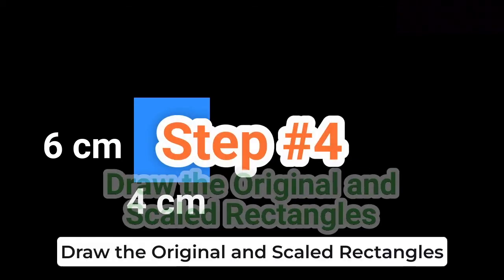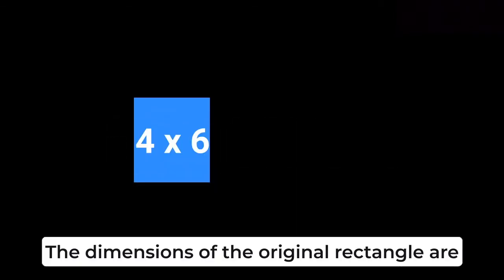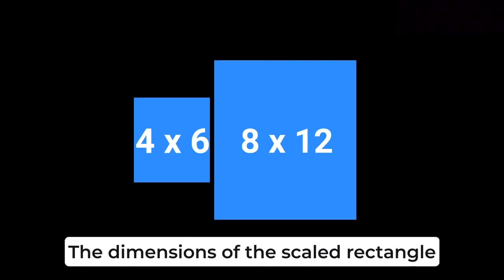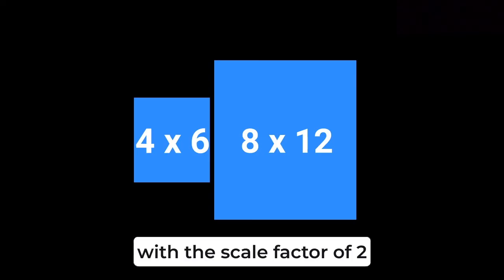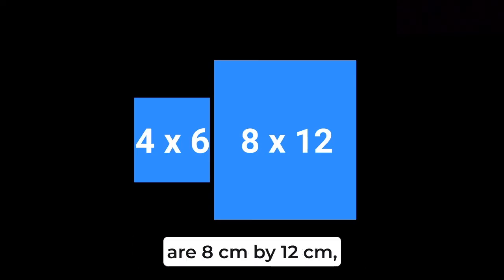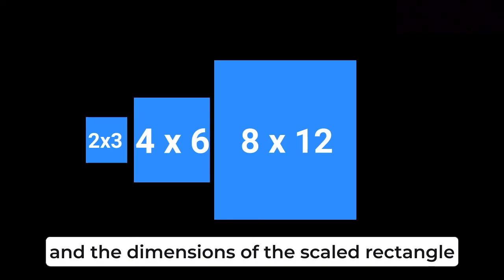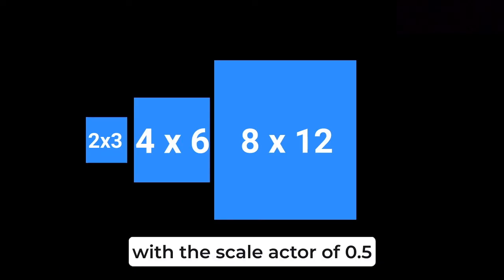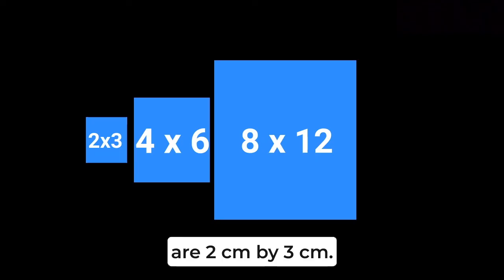Step four, draw the original and scaled rectangles. The dimensions of the original rectangle are four centimeters by six centimeters. The dimensions of the scaled rectangle with the scale factor of two are eight centimeters by 12 centimeters, and the dimensions of the scaled rectangle with the scale factor of 0.5 are two centimeters by three centimeters.